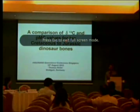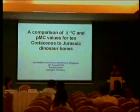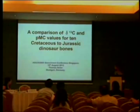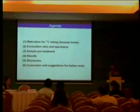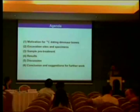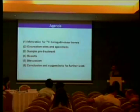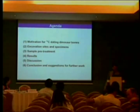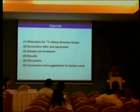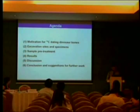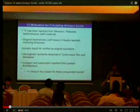The presenter says: 'Good afternoon, everybody. I'm going to present the results of a comparison of Delta-13C and PMC values for 10 Cretaceous-Jurassic dinosaur bones. The motivation — I'll go through the agenda starting with why we did such unusual C-14 dating experiments on dinosaur bones, then present excavation sites and specimens, how samples were pre-treated, then the results — which will be very interesting to all of you — and finally discuss their origin, arrive at a conclusion, and suggest further work.' The presenter is Thomas Seiler, a German, doing quite well in English.